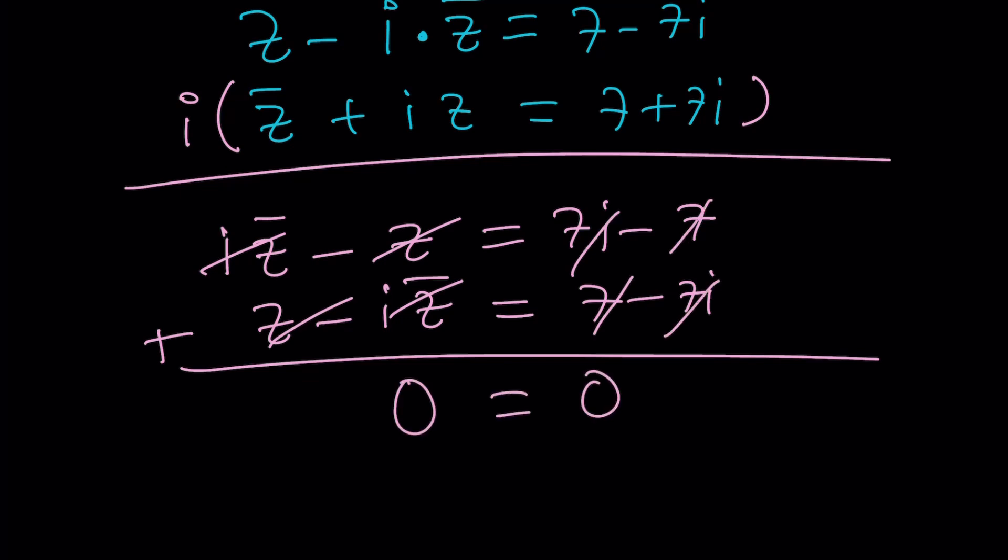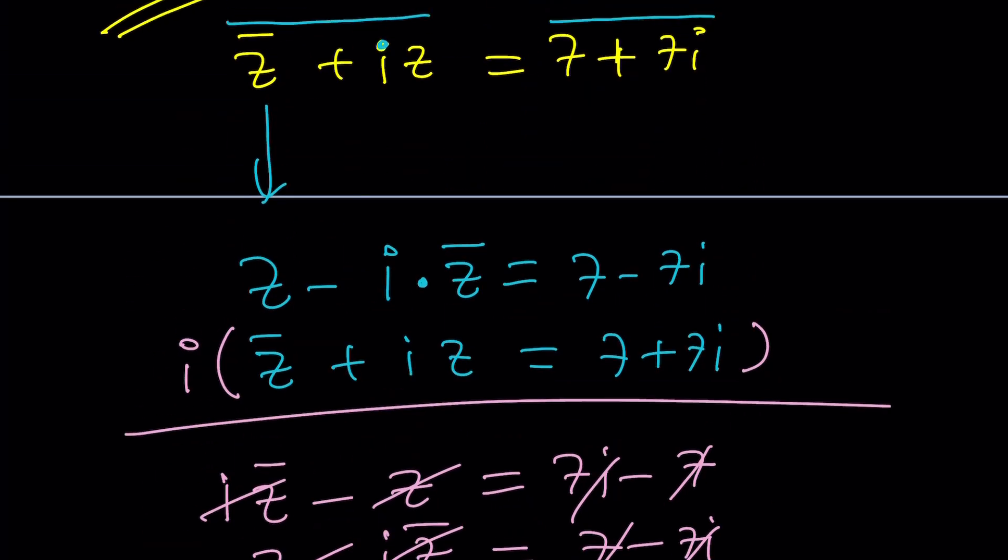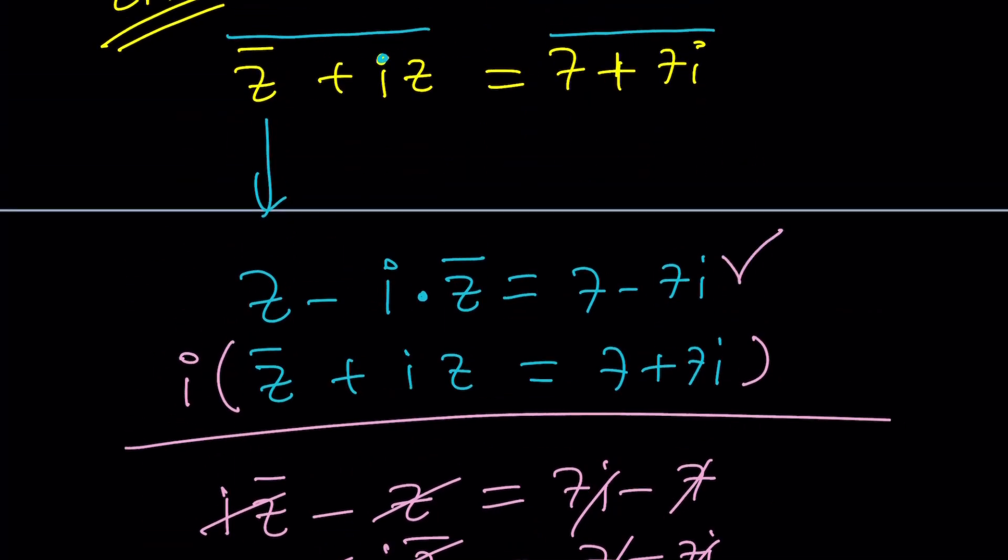So, does that mean any Z would work? No, not really. Because it still has to satisfy the original equation. So, basically, the solution comes from the first equation. But we just wanted to use the second. Like I said earlier, I didn't try this. I didn't even know it was going to end up here. But that was a surprise for me, too.